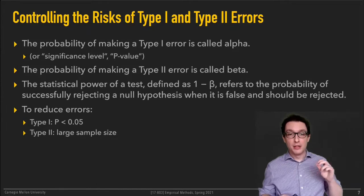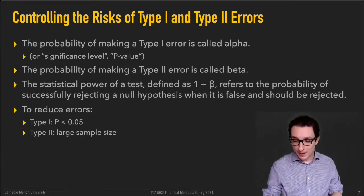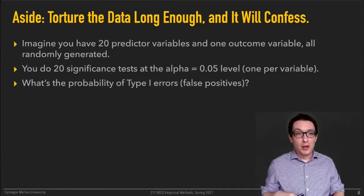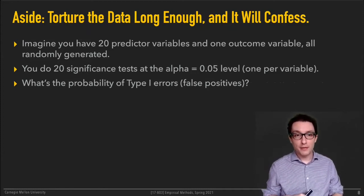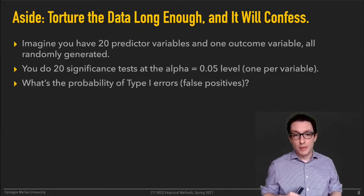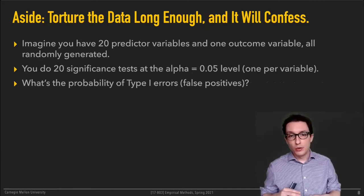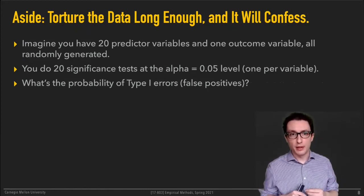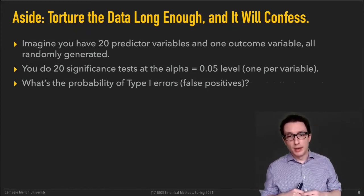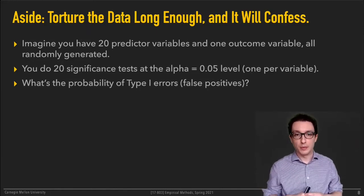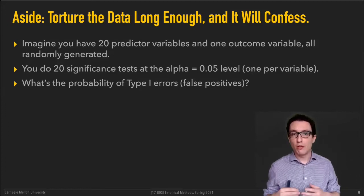You want to protect against that by setting this threshold to be very low — you want to say there's very little chance for that to have happened. If that's the case, you sort of conclude the opposite: you accept the alternative hypothesis. Now here's a cool exercise. Imagine you have 20 variables that you have measured, and you want to study their correlation or effect on some outcome variable that you care about — say, productivity of typing code or task completion time.